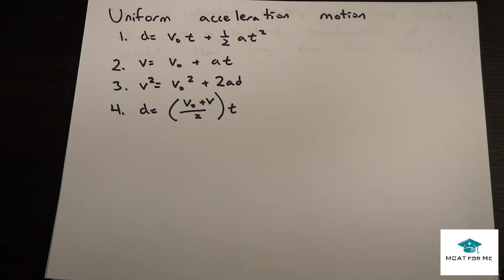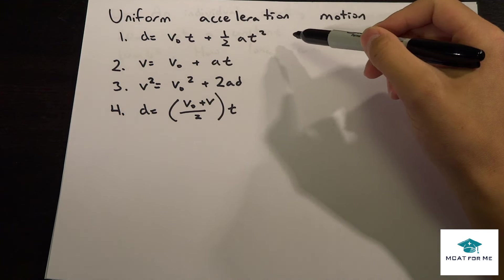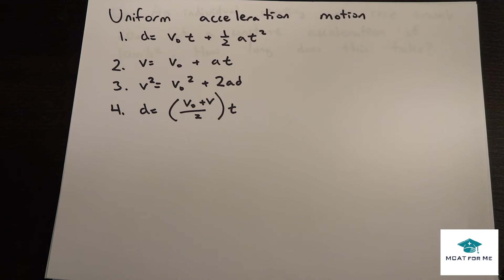The distance, the time, the velocity, the final velocity. And so there's only really four equations that we really need to memorize that we need to know for the MCAT.